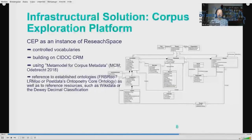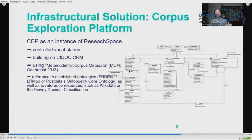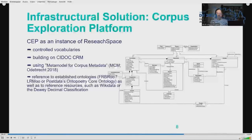The ontology of CEP, as a concrete instance of ResearchSpace, is conceived as a descriptive metamodel for literary corpora, providing controlled vocabulary for categorizing corpora, documents, and file formats. The formal ontology conforms to CIDOC CRM, while building on the metamodel for corpus metadata conceived by Caroline Odebrecht.